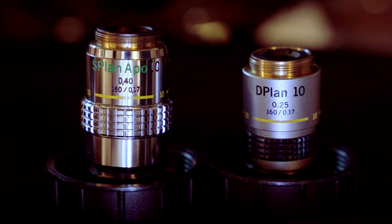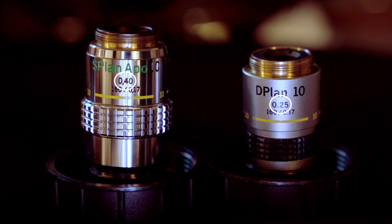Numerical aperture is so important for microscopy, they print it right on the lens. Don't ignore numerical aperture if you're shopping for a new lens.